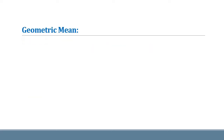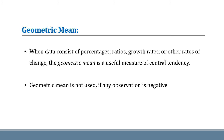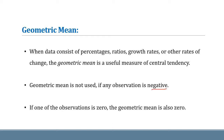Basically, geometric mean is a measure of central tendency. When data consists of percentage ratios, growth rates, or other rates of change, the geometric mean is a useful measure of central tendency. The geometric mean is not used if any of the observations is negative. If one of the observations is zero, the geometric mean for that data set will be zero.